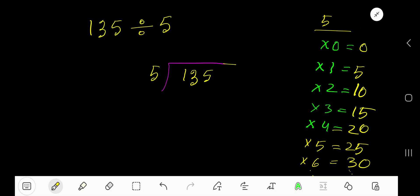135 divided by 5. 5 is a divisor, so we need the multiplication table of 5: 5 times 0 is 0, 5 times 1 is 5, 5 times 2 is 10, 5 times 3 is 15, 5 times 4 is 20, 5 times 5 is 25, 5 times 6 is 30.